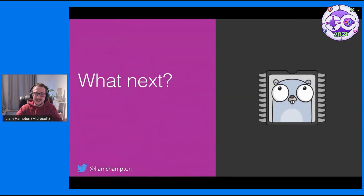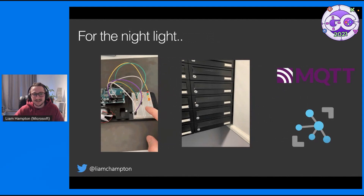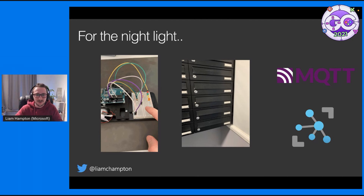What am I going to be creating next with TinyGo? For my soil moisture sensor, I'm going to create something that will let it water itself — I've asked Santa for a water pump this year. For my nightlight, I'm going to implement it in a letterbox. I live in a block of flats, and it's an arduous task to keep running downstairs to check the post every day. So I'll put a sensor in my letterbox that gives me a notification when the post arrives, hopefully using MQTT and IoT Hub in Azure.